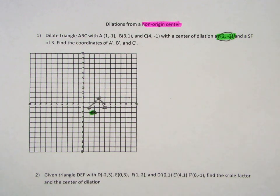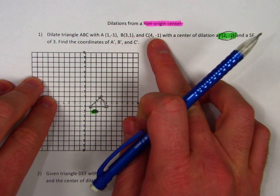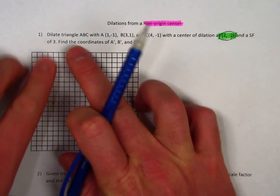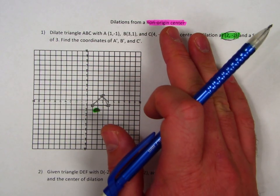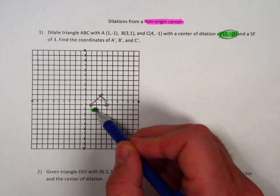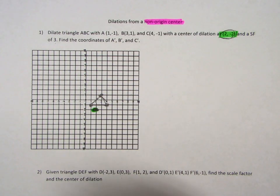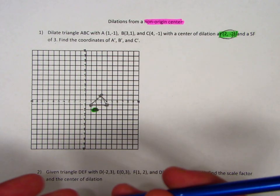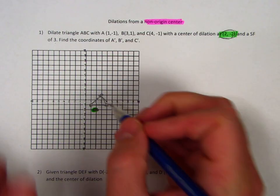For this, there's not really an algorithm. I can't just take these coordinates and multiply by my scale factor like we did in our previous example when we dilated from the origin. Since we're dilating from a different point, I can't just multiply, and there's not a calculation you can simply make. You basically just have to go off the graph.